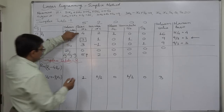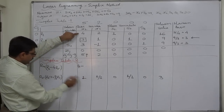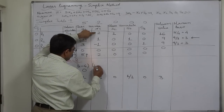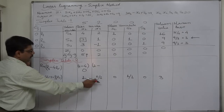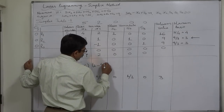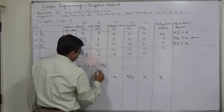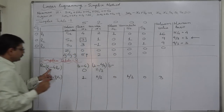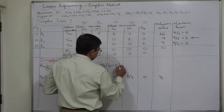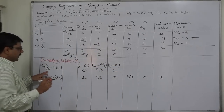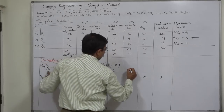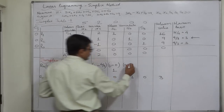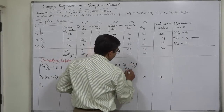R4 = R1 minus 4 into R5. 4 into 1 is 4, so 0 comes here. R1 is 2, minus 4 into R5 which is 1/3, so 2 minus 4/3 gives us 2/3. R1 here is 1, minus 4 into R5 which is 0, so 1 remains as it is. R1 in this cell is 0, minus 4 into R5 which is 1/3, giving us minus 4/3.